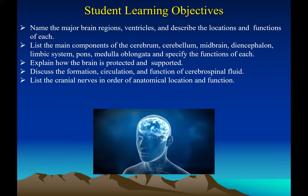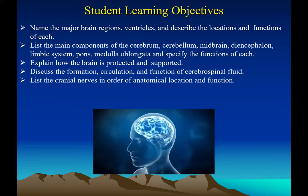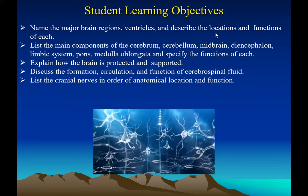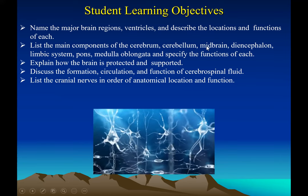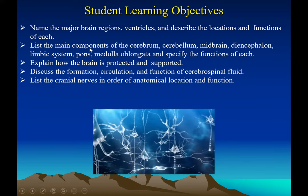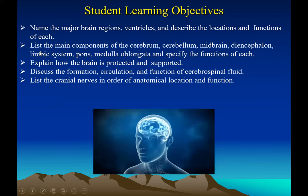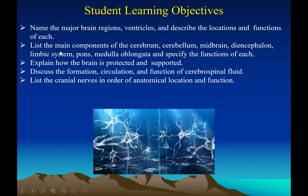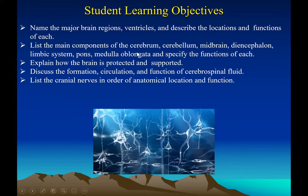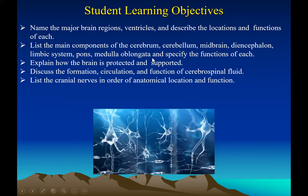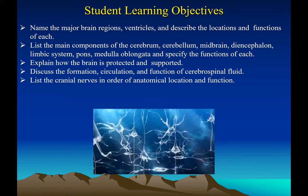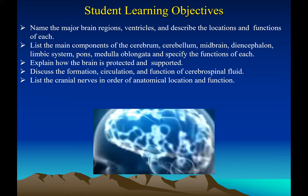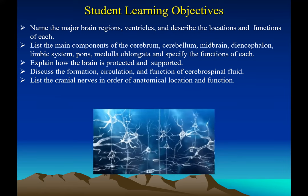The six divisions are the cerebrum, cerebellum or the little brain, diencephalon, mesencephalon or midbrain. We'll talk about the structures that control our emotions and memory — called the limbic system — and also the pons and medulla oblongata. By the end of the chapter, you should have mastered the different locations, structures, and functions of each part of your brain.